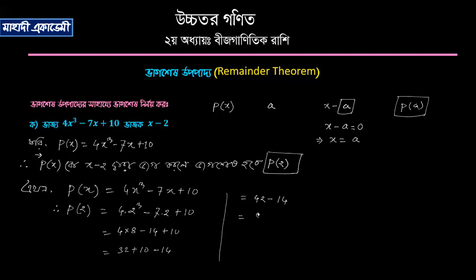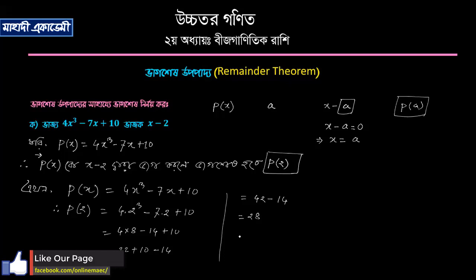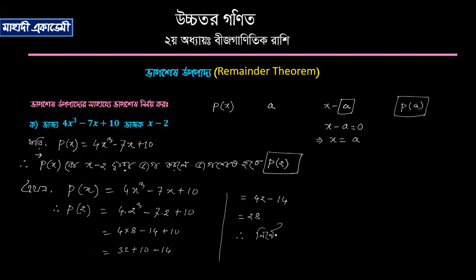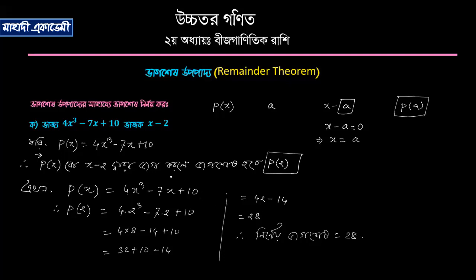This means 8 and this means 2. So 4x cubed minus 7x plus 10, with x minus 2, is equal to 28. I will write this — the remainder is equal to 28.